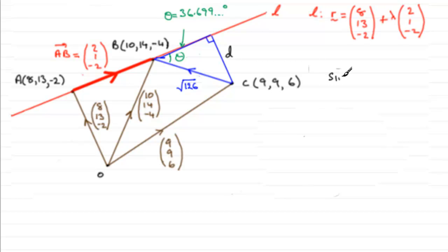We've got the sine of theta then equals the opposite side d, that shortest distance, divided by the hypotenuse which is the square root of 126. So rearranging this for d, d will equal root of 126 multiplied by the sine of angle theta.